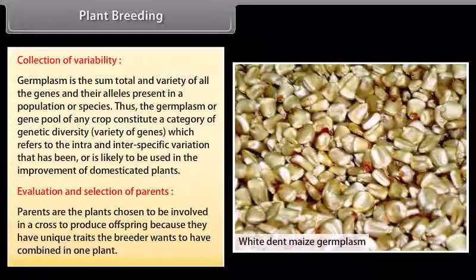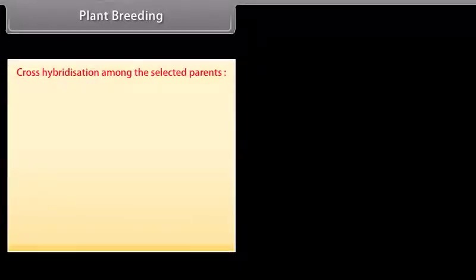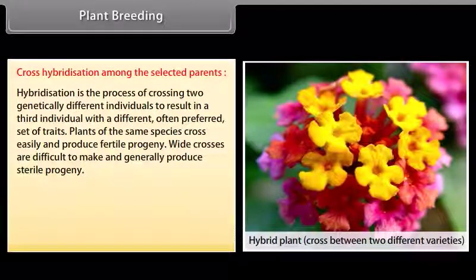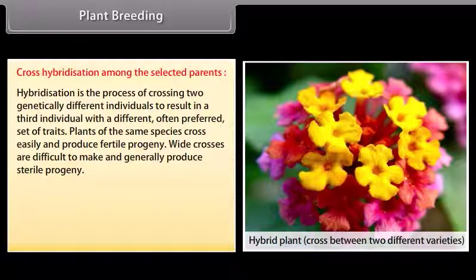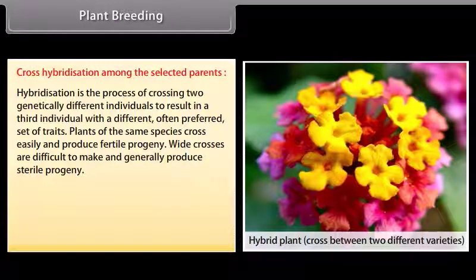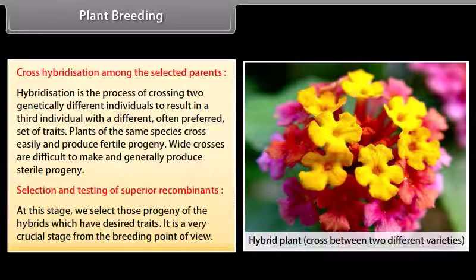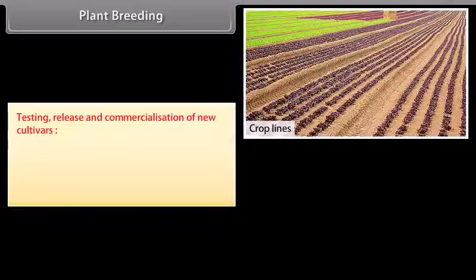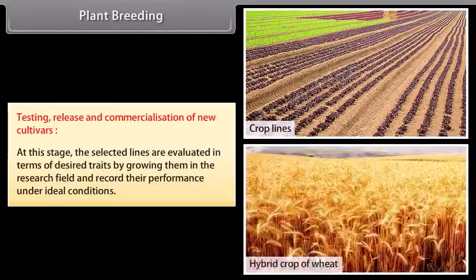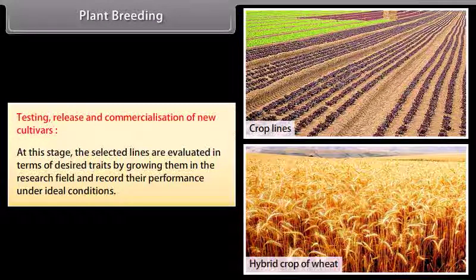Evaluation and selection of parents: Parents are the plants chosen to be involved in a cross because they have unique traits the breeder wants combined in one plant. Cross hybridization among selected parents: Hybridization is the process of crossing two genetically different individuals to produce a third individual with a different, often preferred, set of traits. Plants of the same species cross easily and produce fertile progeny; wide crosses are difficult and generally produce sterile progeny. Selection and testing of superior recombinants selects progeny with desired traits. Testing, release, and commercialization of new cultivars involves evaluating selected lines under ideal conditions in research fields.